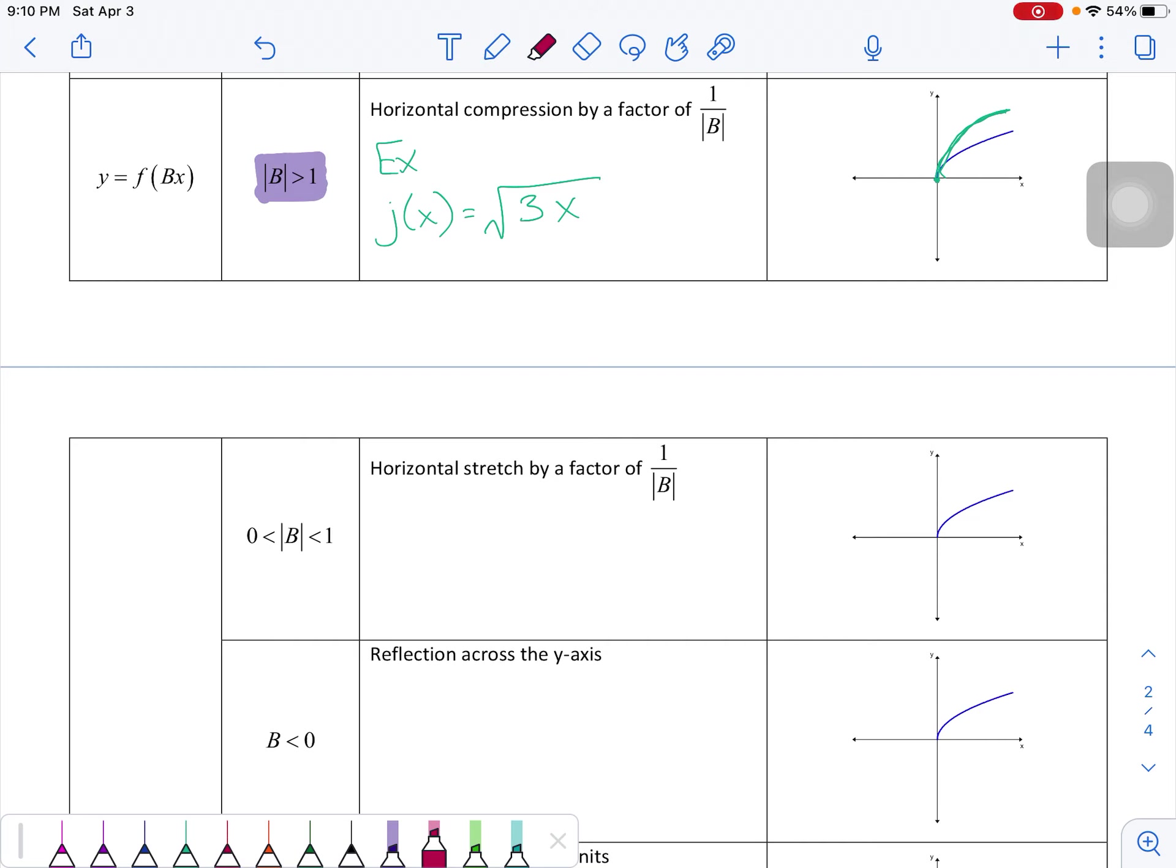So now what happens if b is between 0 and 1? Let's say for example we do p of x is equal to the square root of 0.4x. Now this is going to get a little bit weird because of the factors here. You would have a horizontal stretch by a factor of 1 over 0.4. Now 1 over 0.4 is 2 point something when you actually do the division out. So that's actually going to stretch this graph further away from the y-axis.